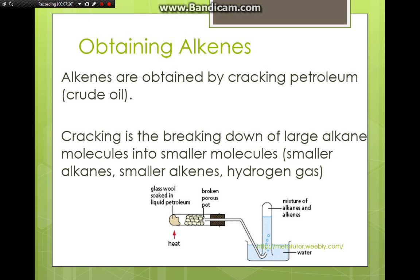In the lab, or in exam questions, you might see diagrams like this — a simple setup for cracking alkenes in the lab. We have liquid petroleum or large molecules of alkanes soaked inside cotton wool or glass wool, which are then heated to turn them into gases. The gas passes into an area containing a catalyst. The catalyst helps the breaking down of the molecules into small alkanes, alkenes, and sometimes hydrogen gas, which can be collected by water displacement.